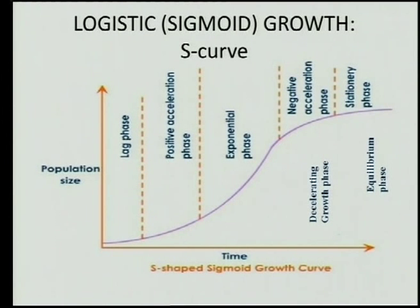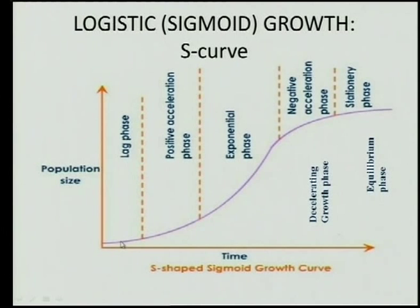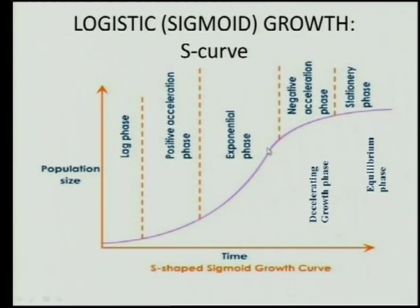We're busy with population studies so it's important that you know this. We get different stages here as well, and learners you must know the different phases or stages and why they happen. The first is the lag phase — organisms need to acclimatize, find mates, they may be too young or not of reproductive age yet, or very few in number. As they settle in and find their shelters, there's a positive acceleration phase and then a rapid increase referred to as the exponential phase.